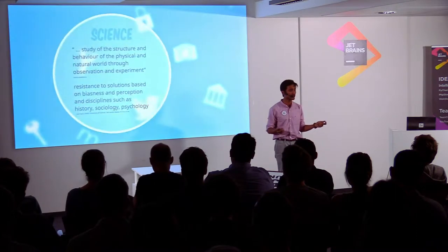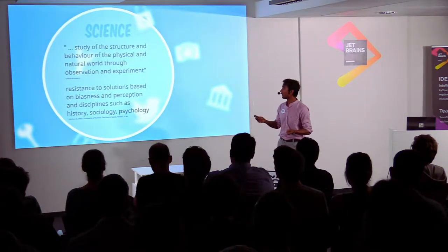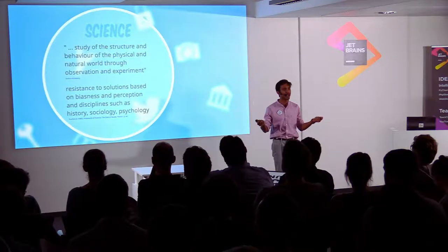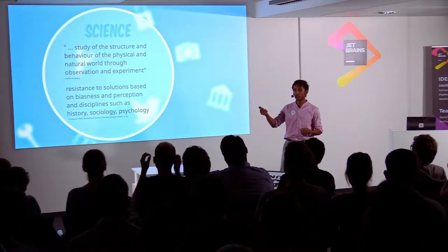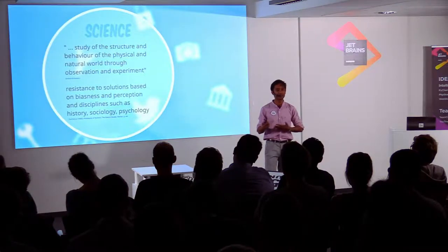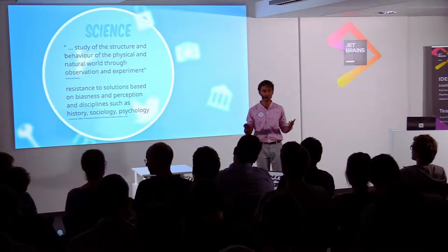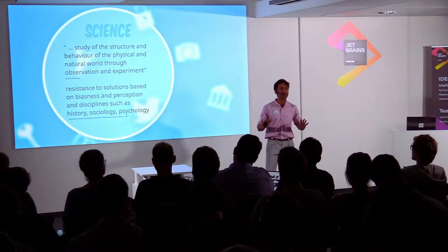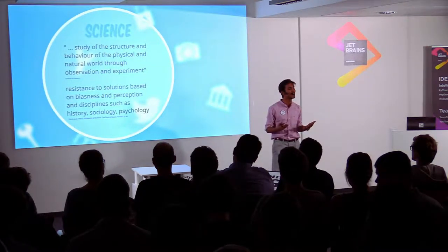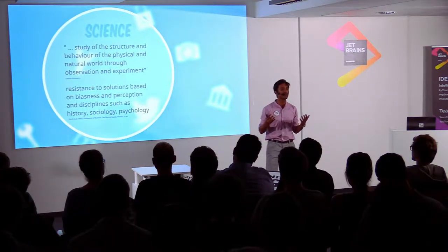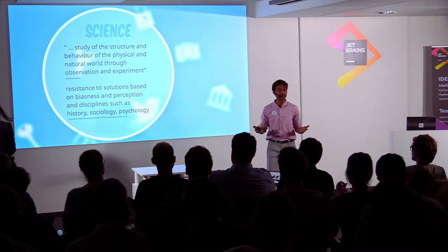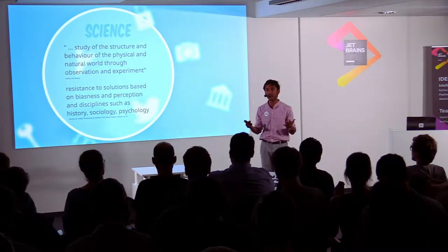If you look at the term science, it's originated from Latin, which means to know. By definition, it's a study of the structure and behavior of the physical world, obtained through experiments and observations. The philosophy behind science tries to resist explanations coming from disciplines such as history, psychology, and sociology — that's how it tends to stay objective. I'm not saying those disciplines are bad or unimportant; they may tend to be subjective at times. The philosophy of science is that it always tries to stay as objective as it can.